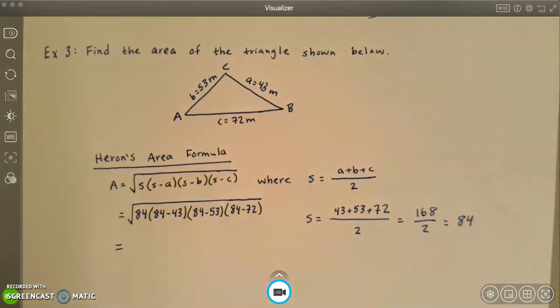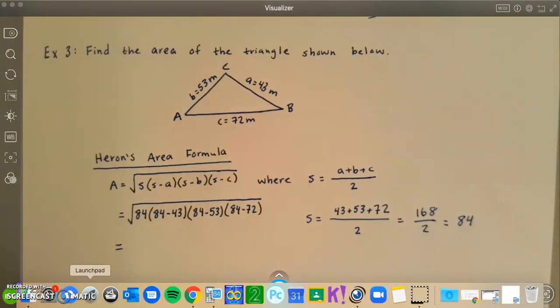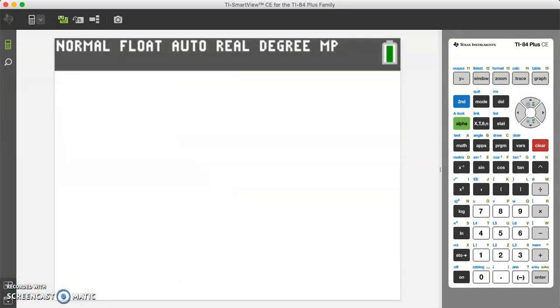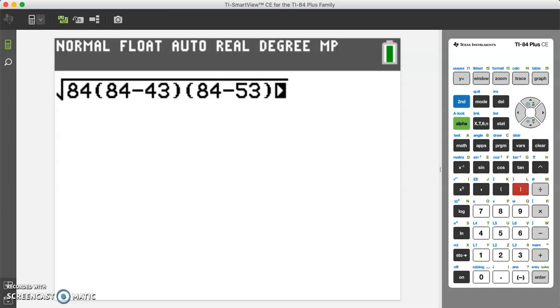Let's go ahead and see what that gives us in the calculator. I'm going to do second square root, and we have 84 times 84 minus 43, close parentheses, times 84 minus side b, which is 53. And my last one, I'm going to do 84 minus side c, which is 72.